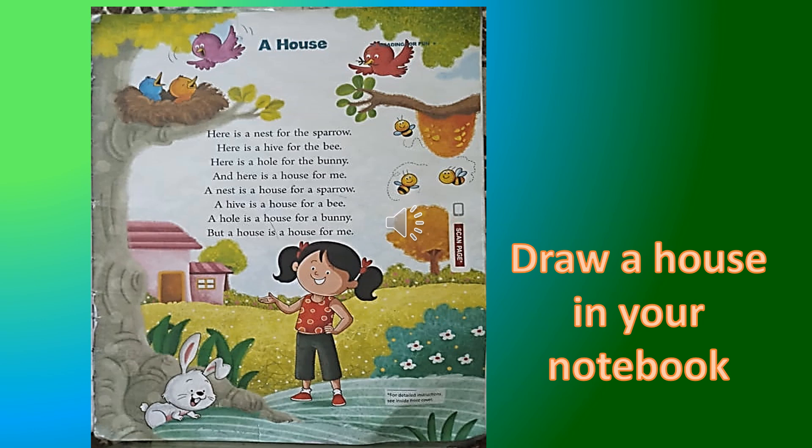So I'm going to start with the poem. 'A House': Here is a nest for the sparrow, here is a hive for the bee, here is a hole for the bunny, and here is a house for me. A nest is a house for a sparrow, a hive is a house for a bee, a hole is a house for a bunny, but a house is a house for me.